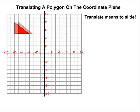Another term for translating an object is to slide an object. When we translate or slide an object on the coordinate plane, we can move that object either left or right, which is a movement in the x direction, or up and down, which is a movement in the y direction.